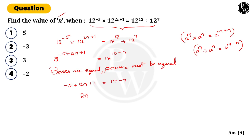So we will get 2n minus 5 plus 1, that's minus 4, equals 13 minus 7, which is 6. Then 2n equals 6 plus 4, we get 10. When n equals 10 by 2, that is equal to 5.